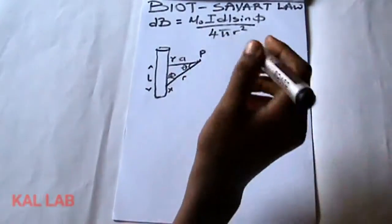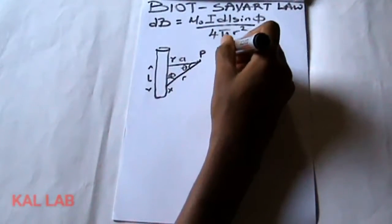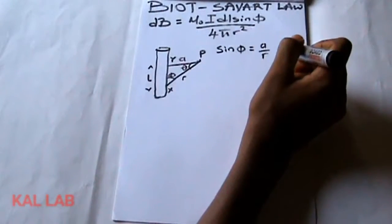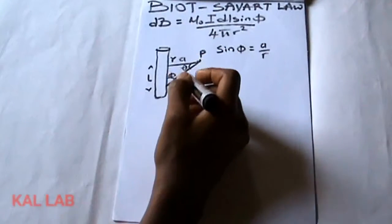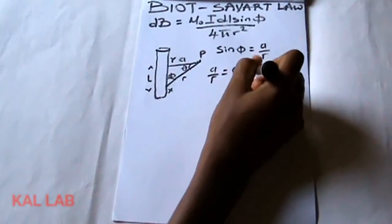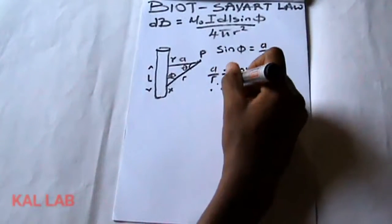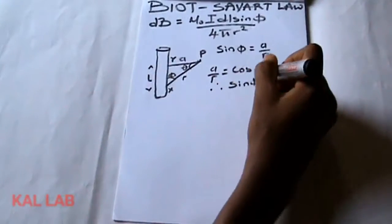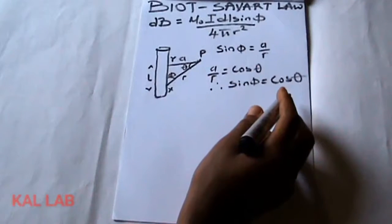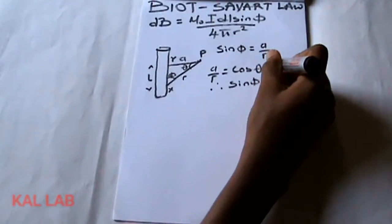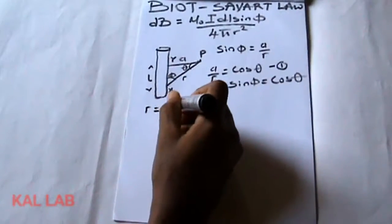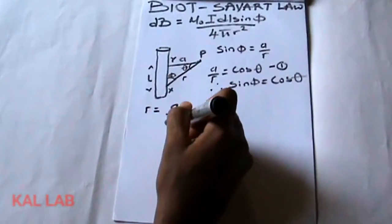From this diagram we can see that sinφ is equal to a over r. And a over r is the same thing as cosθ. So therefore sinφ is equal to cosθ — this is our first step. From this equation we can also show that r is equal to a over cosθ.